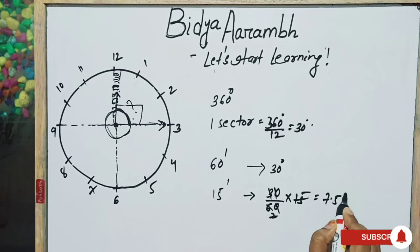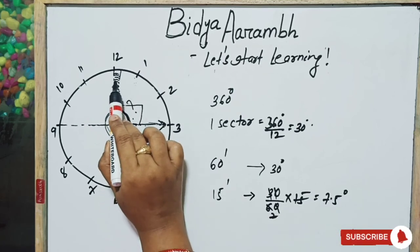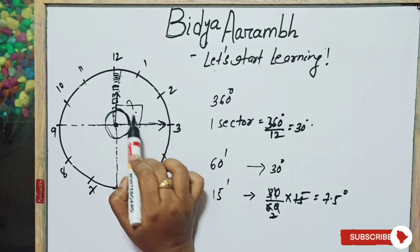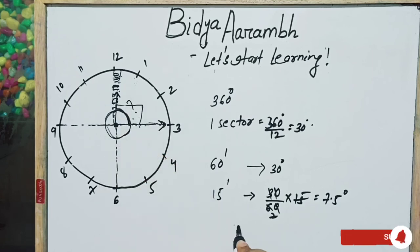That is 7.5 degrees. This means we have to subtract from 90 degrees. This 7.5 degrees we subtract from 90 degrees. That is 82.5 degrees.